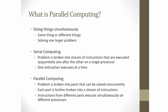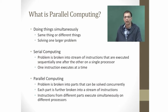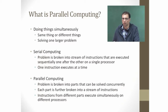In serial computing, the problem is broken down into a stream of instructions and these instructions are executed sequentially, one after the other, on a single processor. The important point is that only one instruction is executed at a given point in time. When you move to parallel computing, the problem is broken down into multiple parts that can be solved concurrently and simultaneously. Each part is further divided into a stream of instructions which can be executed on a processor.